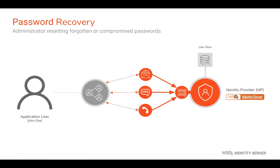WSO2 Identity Server also enables administrators to initiate a password change for forgotten, compromised, or vulnerable passwords. Password reset can be done via SMS, email, or even offline. Password reset via email is done by emailing a password reset link to the user's registered email ID. Password reset via SMS is done by sending a one-time password to the user's registered mobile number. The user can also reset the password by contacting the call center and requesting a password reset.